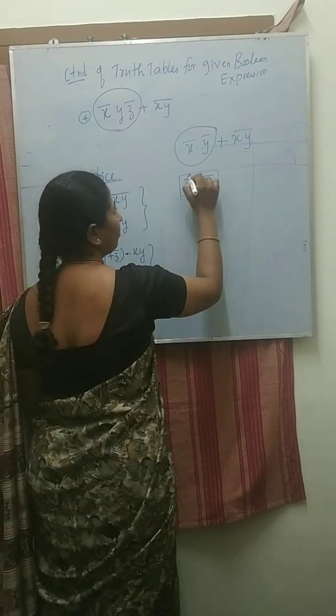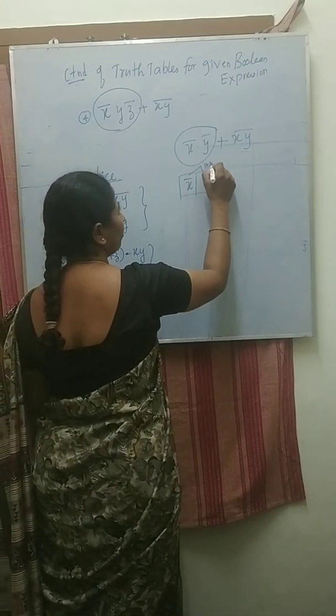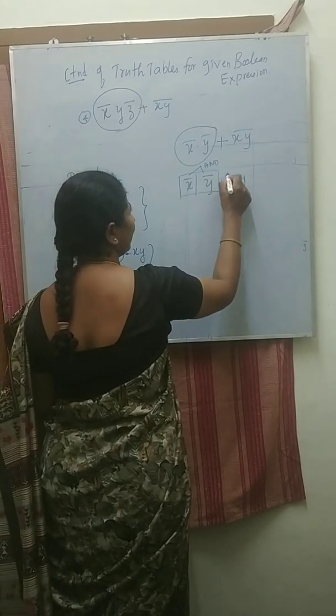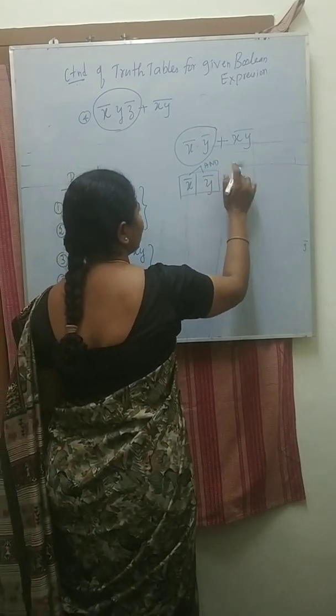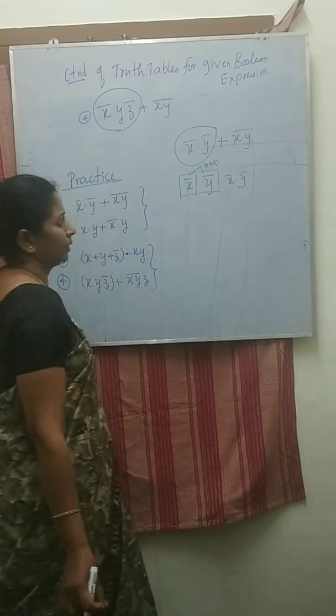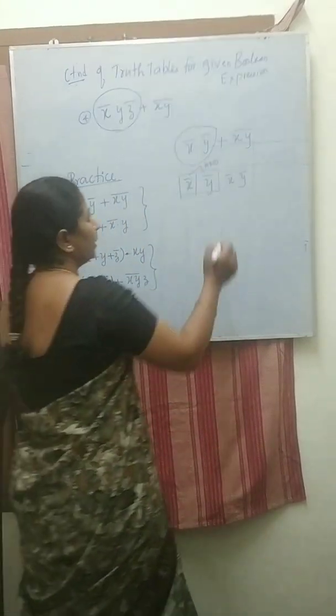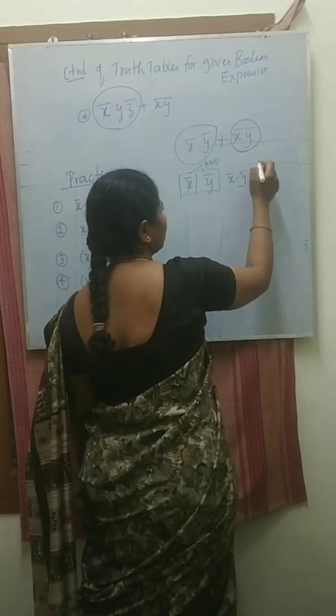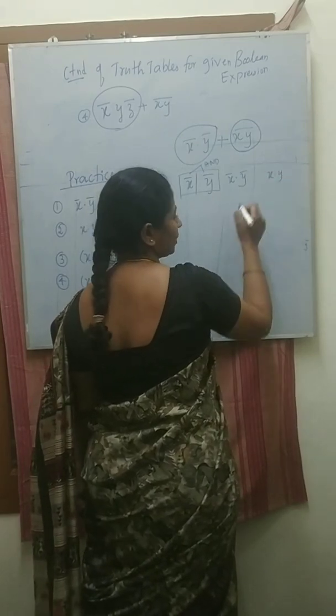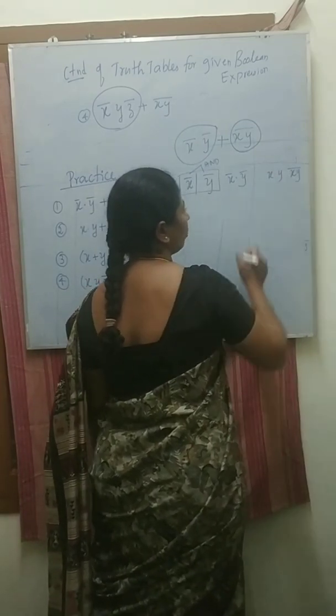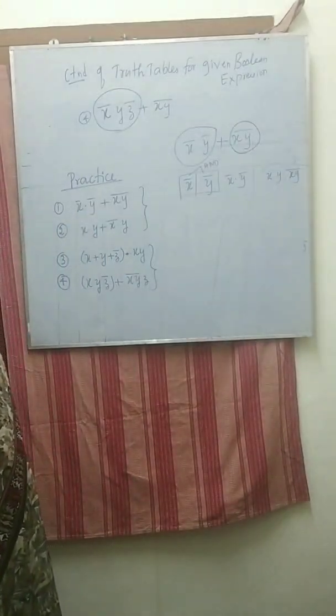Then apply these two and operation X bar into Y bar. Then according to this, first find the XY, then find the XY whole bar. Is it clear?